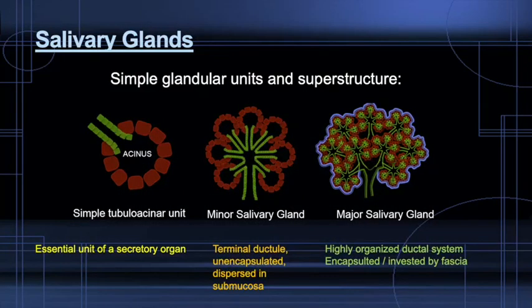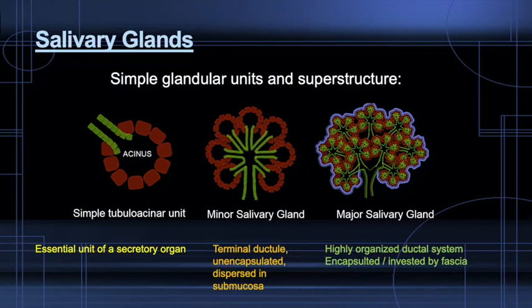Moving on to the salivary glands — an acinus is a solitary unit of columnar epithelial cells that produce and secrete saliva, which then exits via a duct. A clustered group of acini with conjoined ducts and a terminal duct comprise a minor salivary gland. The major salivary glands have a more highly organized system of tubular acinar units draining into a common duct. The major salivary glands are encapsulated by connective tissue and invested by deep layers of cervical fascia, with the exception of the sublingual gland.